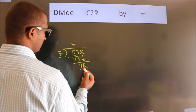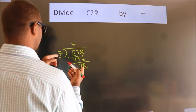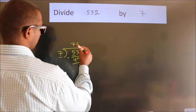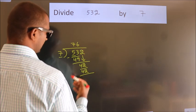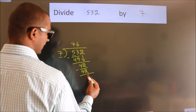So, 42. When do we get 42? In 7 table, 7×6=42. Now we subtract. We get 0.